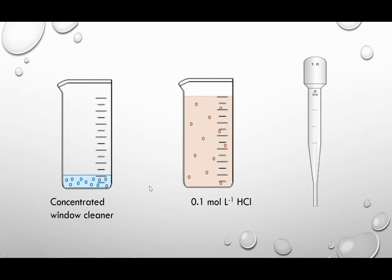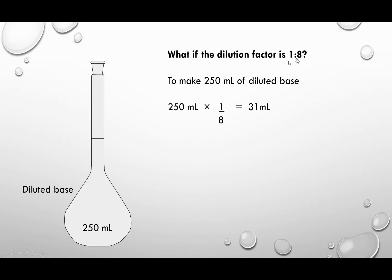Let's take our window cleaner. We found in our dilution trial that 8 milliliters of our 0.1 mol per liter hydrochloric acid neutralized 1 milliliter of our concentrated window cleaner. So our dilution factor is 1 is to 8, so when we make up our diluted window cleaner solution for the titration, we're going to need 1 eighth.